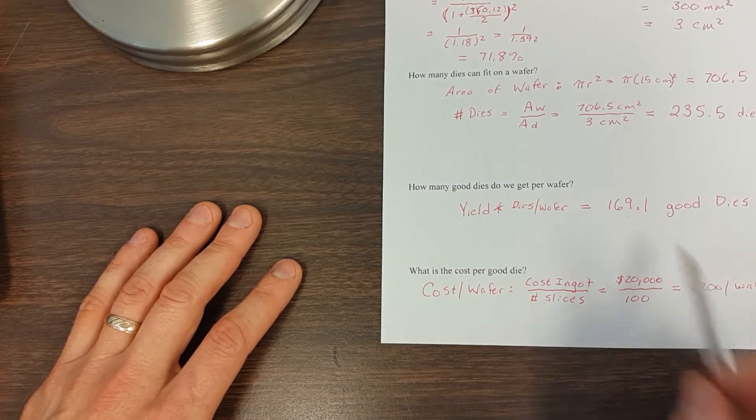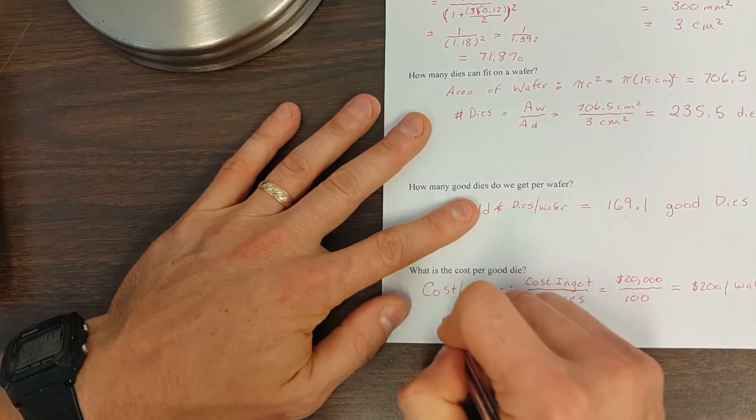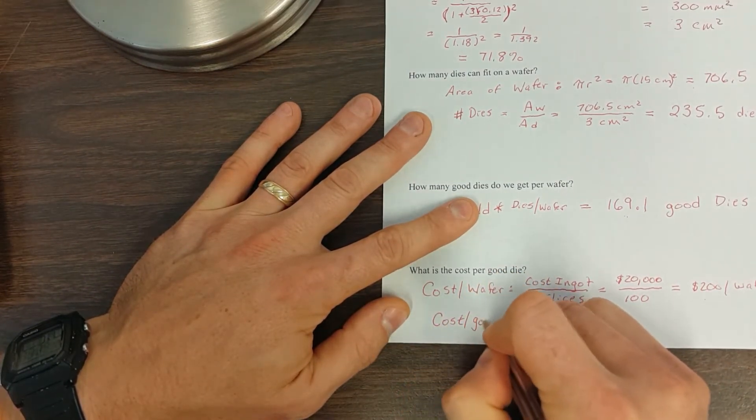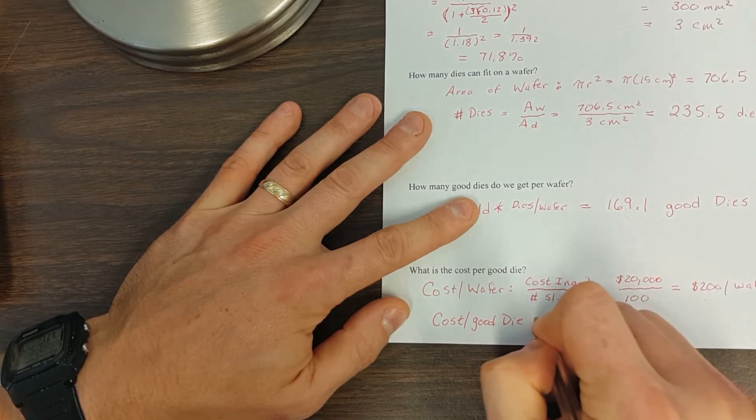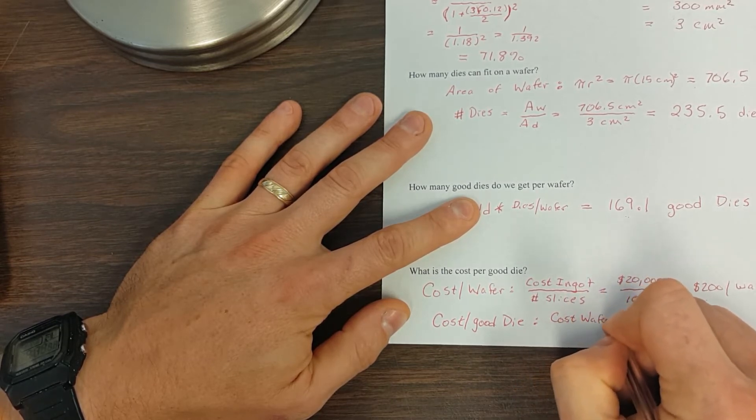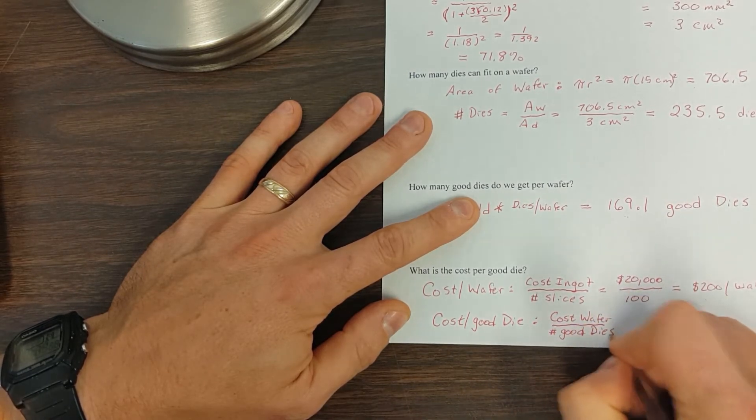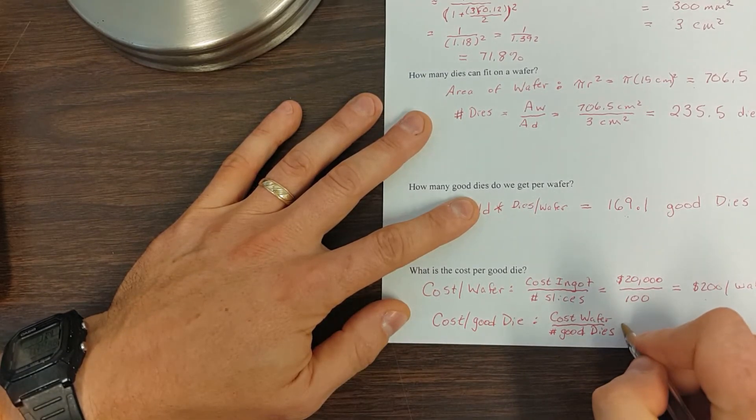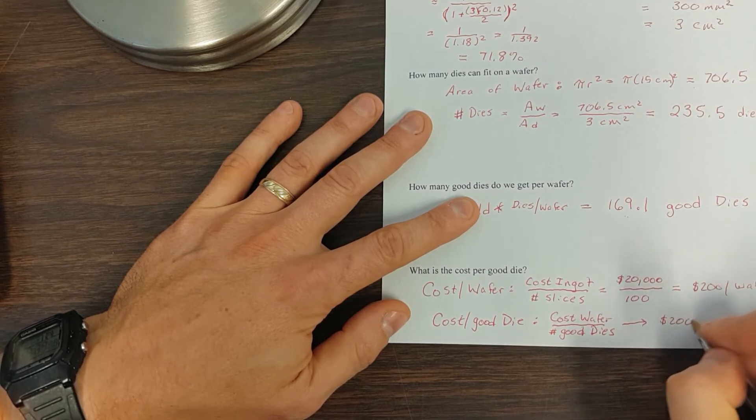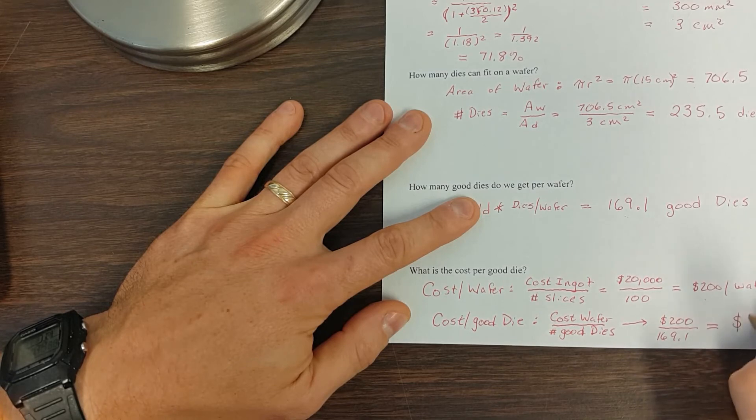All we need to do is divide. So the cost per good die is just going to be the cost of the wafer divided by the number of good dies. And then when we do that, we see that we paid $200 for the wafer. We got 169.1 good dies out of it. And that means that the average cost is going to be $1.18. And that's our final answer.